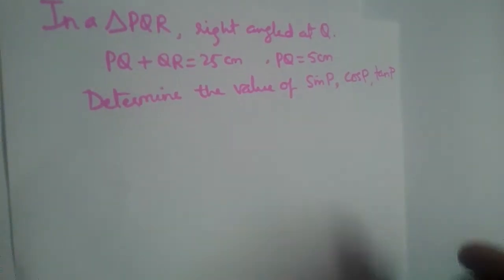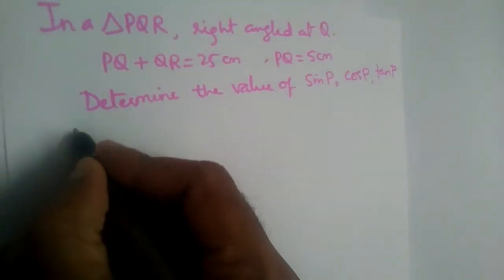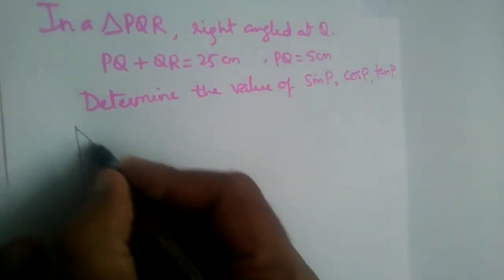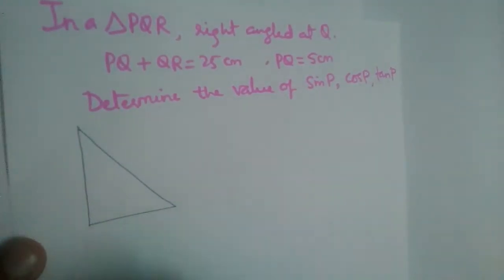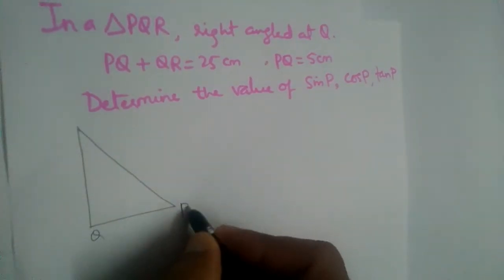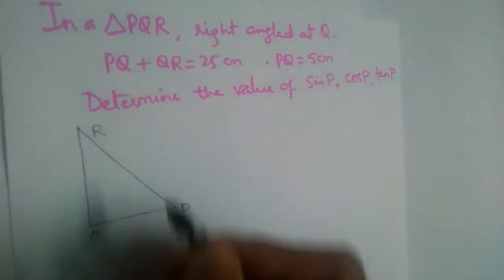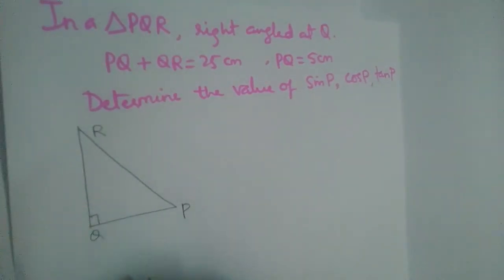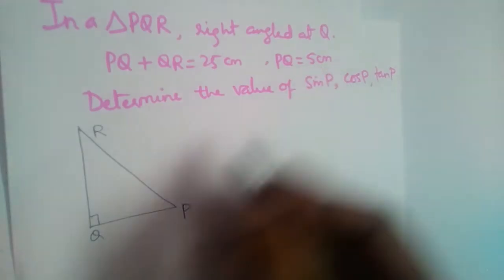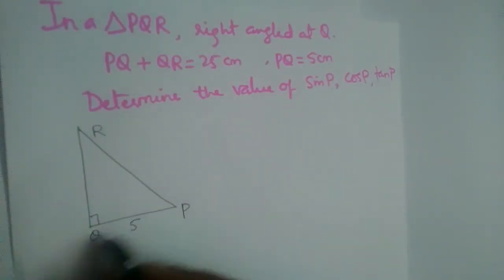Let us solve this problem. Let us first draw a right angle triangle. Right angle is at Q. So we can take P here and R here. What is given? PQ is 5, so this is 5. PQ is 5.